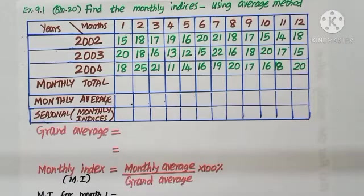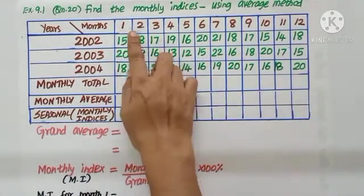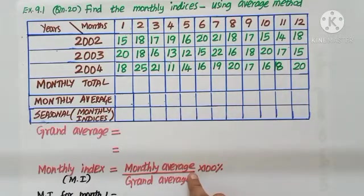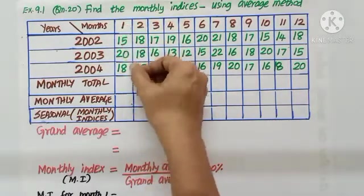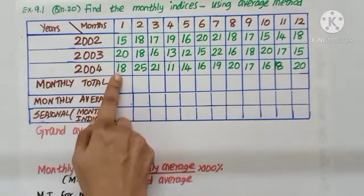Question number 20. Find the monthly indices. Seasonal indices can be calculated for quarters as well as months. As I see the question, 12 months are given, Jan, Feb, March like that. So, all the months we can name. Each month, find out the total. How many values given? 3.